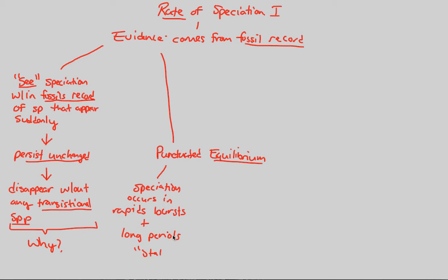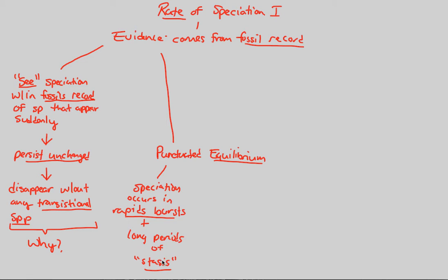Stasis — if you know the word homeostasis, 'homeo' means same and 'stasis' means state — refers to long periods of steadiness. So when we combine a rapid burst of speciation, as seen in the fossils with rapid new species appearing, those species then stay for a long time. They stay steady through a long period of stasis, as stated by this theory.